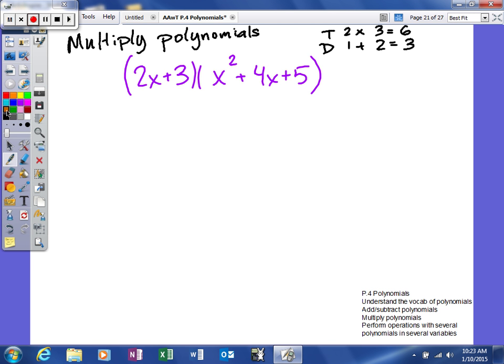The distributive property works for everything, so we're going to take the first term of this binomial and multiply it by each term in your trinomial. When you multiply things together, you're going to multiply the coefficients. Two times one is two.